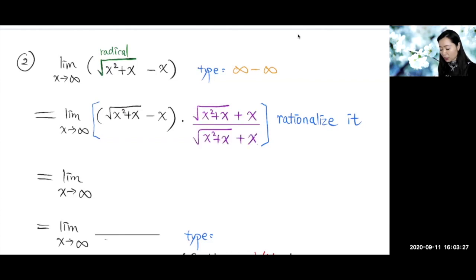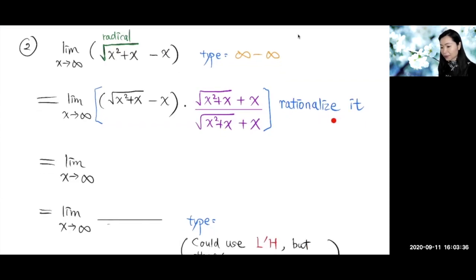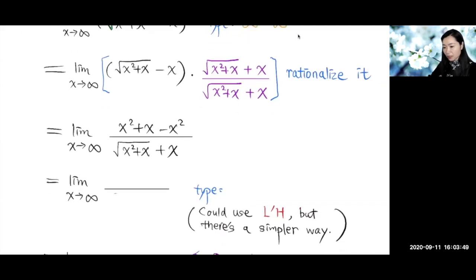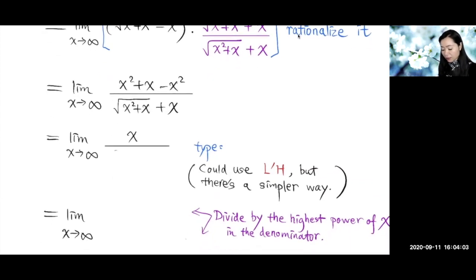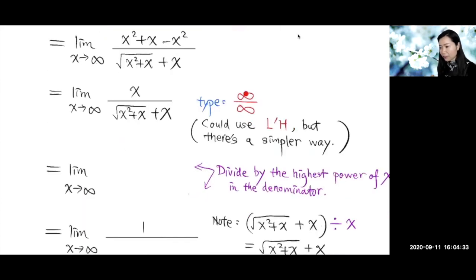We multiply by the conjugate to rationalize it. When we do this, the x² and negative x² cancel, leaving x in the numerator. The denominator becomes the square root of x² plus x. Now checking the type: the numerator goes to infinity and the denominator also goes to infinity, so this is the infinity over infinity type — one of the two emergency types.